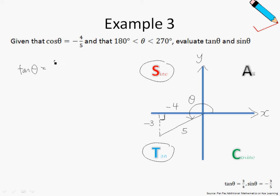Let us now find tangent θ and sine θ. Tangent θ is defined as the opposite over the adjacent, which is negative 3 over negative 4, or we can just write it as 3 quarters.